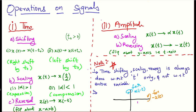In this presentation, let us continue our discussion on various operations of signals. A signal can either be modified by changing its time axis or by changing its amplitude axis. Under time operations, we have time shifting, time scaling, and time reversal. And under amplitude operations, we have amplitude scaling and amplitude reversing.